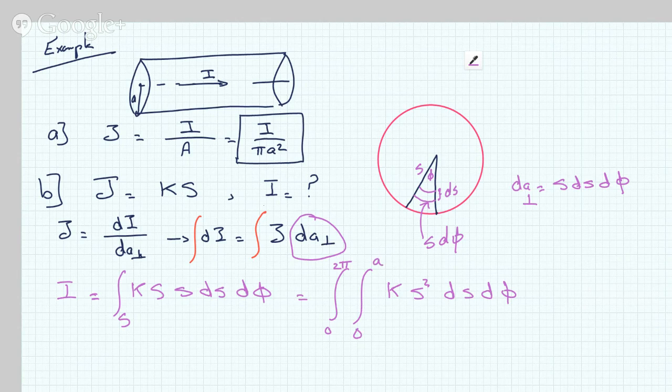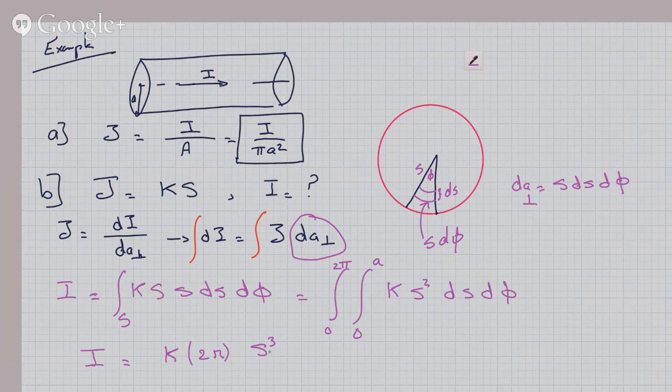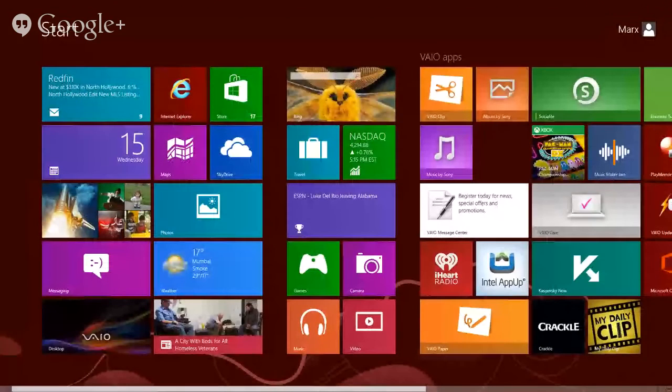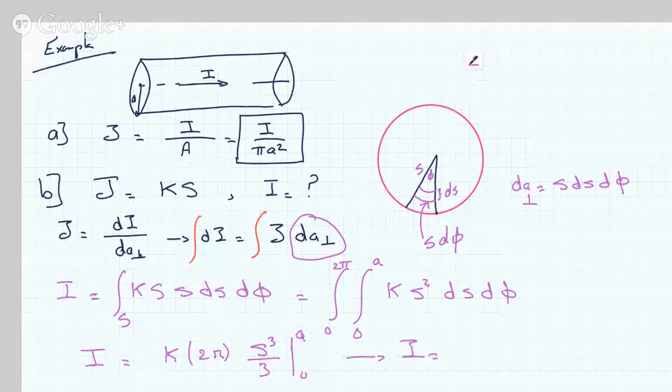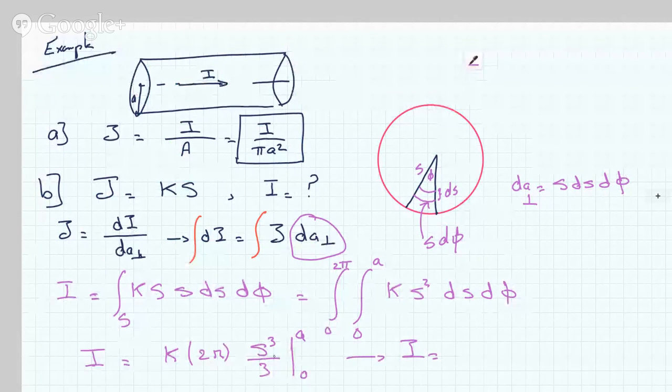This integral is fairly straightforward. The dφ will just give us a factor of 2π from 0 to 2π. And KS² becomes K S³ over 3, from 0 to A.